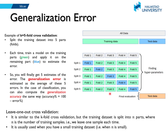The generalization accuracy is estimated as the average of the k accuracies, or you can compute the generalization score based on any other metric. Leave-one-out cross-validation usually gives a better estimate when the training dataset is small. That's how we get an estimation of the generalization error.